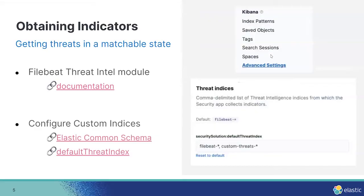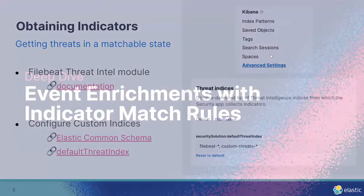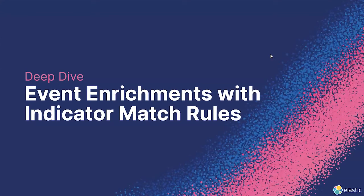I cannot give a specific date, but the Fleet integration is coming really soon, so be on the lookout for that. This is not the only way — if you have absolutely custom indicators in your organization that you'd like to match against, we offer the option to add threat indices through Kibana Advanced Settings to the default threat index. By default this is just Filebeat, but you can add any index, as long as it has the Elastic Common Schema mappings — especially with regards to the threat fields — and they should just work out of the box.